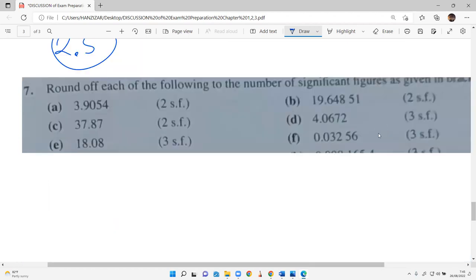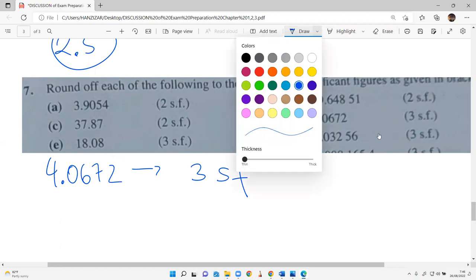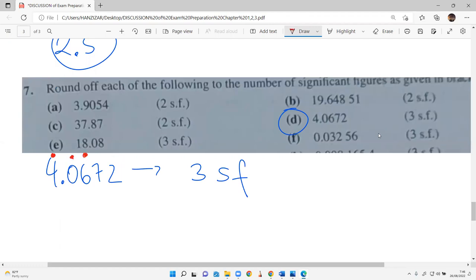Problem 7B: 4.067223 to 2 significant figures. Where do we stop? We have to find where to stop. 1, 2, 3. So 06 or 07? 4.06 or 4.07? 07. Why? Because this 7 increases the value of 6. The next digit rule is very important.